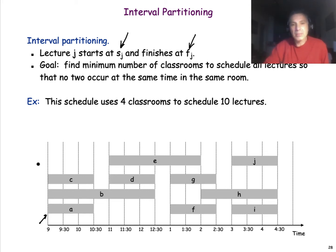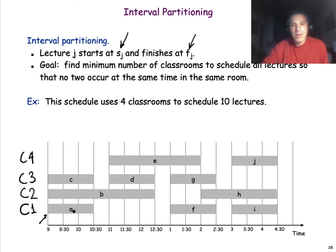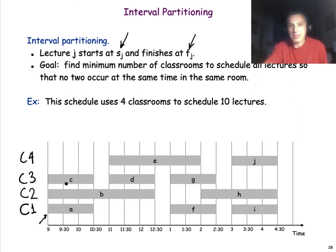We need some classrooms for the lectures — say classroom C1, C2, C3, and C4. We cannot schedule two lectures that overlap in time in the same classroom. If you assign the lectures in this way, you need four classrooms. The question is: is this the minimum number of classrooms needed for these 10 lectures?